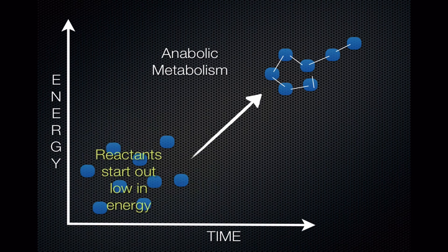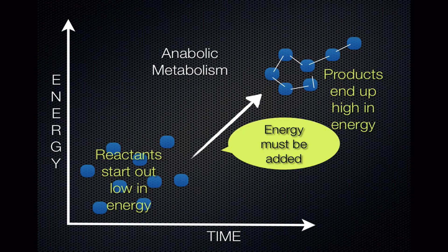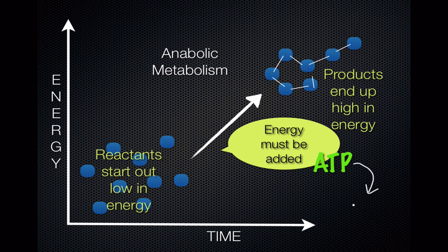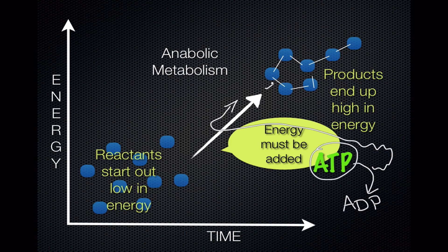The reactants start out low in energy, and the product ends up high in energy. Since you can't create energy, that means energy has to be added — it has to be put in. This energy is going to be added in the form of ATP. And remember, when you take the energy out of ATP, you convert it into ADP, and the energy that comes out is what's pushing this reaction uphill. So the energy that was once in the ATP is now being stored in these bonds.